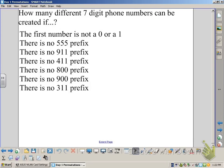See if you can figure out how many possibilities there are for seven digit phone numbers that can be created if the first number is not 0 or 1, and the following prefixes are not allowed.